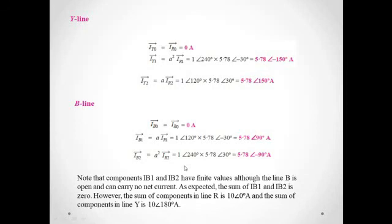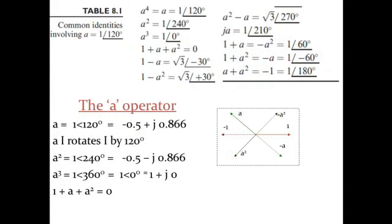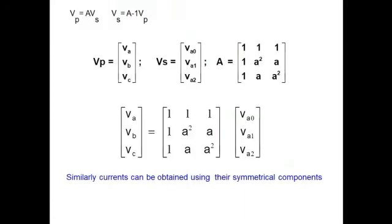These three examples are from the Principles of Power Systems by VK Mehta, and there are more solved examples in the reference book. All these numericals are added in the slides. The summary shows how operator A works — for A² or A³, the rotations differ. In matrix form: for the zero sequence all coefficients are 1; for the positive sequence they are 1, A², A; and for the negative sequence they are 1, A, A².